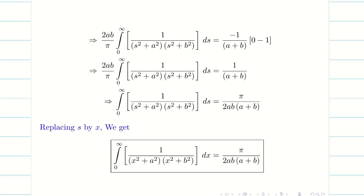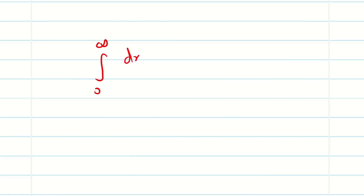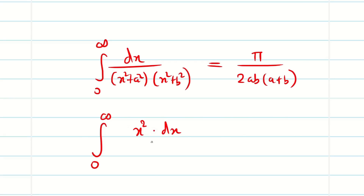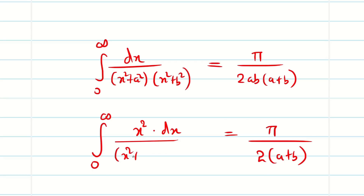So we can easily remember: if the problem is ∫₀^∞ dx/((x²+a²)(x²+b²)), the answer is π/(2ab(a+b)). If it is ∫₀^∞ x² dx/((x²+a²)(x²+b²)), the answer is π/(2(a+b)).